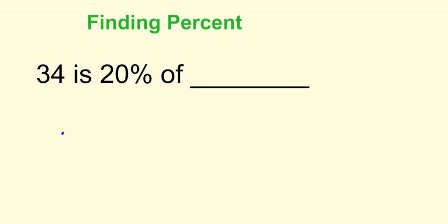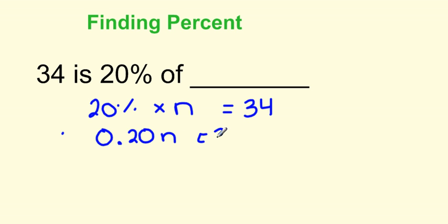How about this one? 34 is 20% of blank. Well, 20% of means multiply. My number, we'll call it n, gives me 34. 20% can be written as 0.20 times n equals 34.